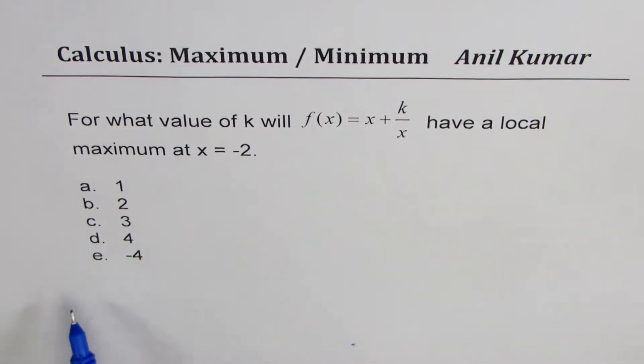Five choices for us are 1, 2, 3, 4, and -4.